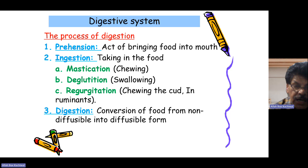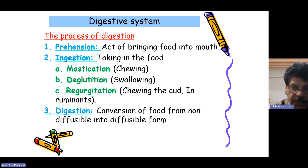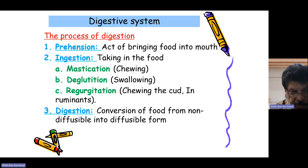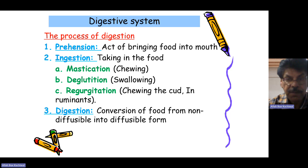The process of digestion depends on seven steps. The first is prehension, the act of bringing food into the mouth — animals may bring food by grabbing it with the tongue, chewing with the lips and teeth, or grasping with the hands like a monkey. Ingestion is the taking in of food. Mastication means chewing, deglutition means swallowing, and regurgitation — where ruminants bring digested food back into the mouth to re-chew, re-swallow, and re-salivate.